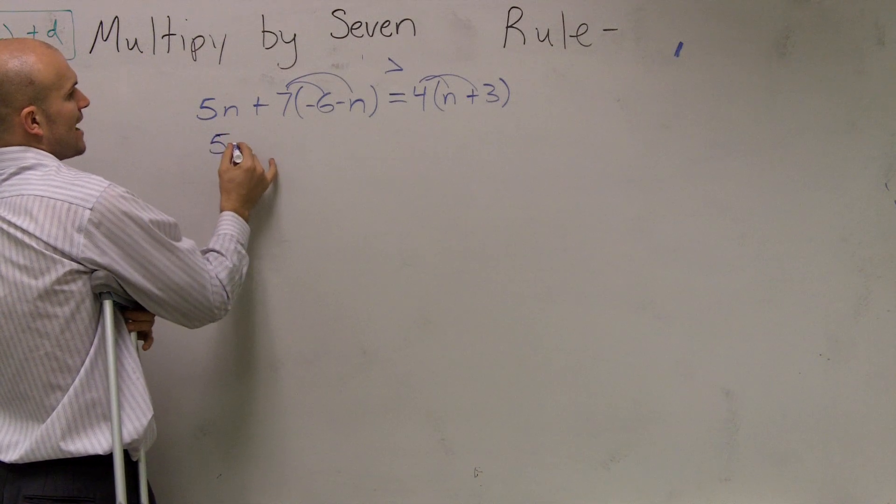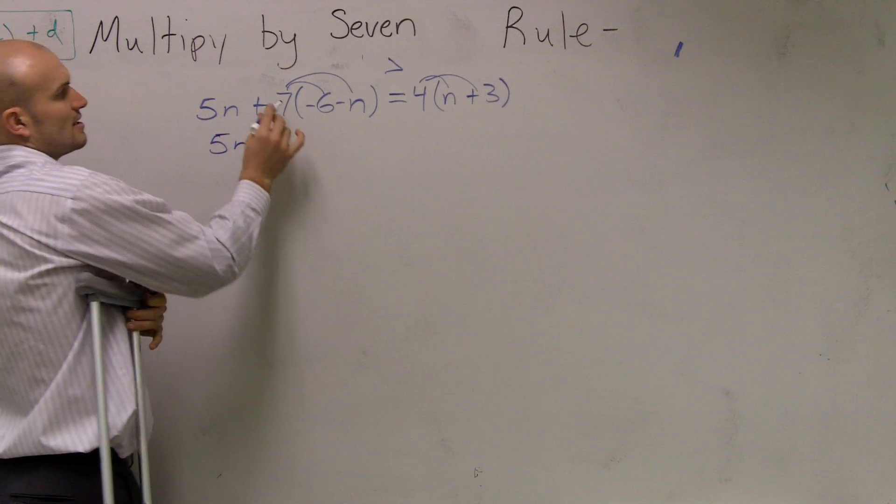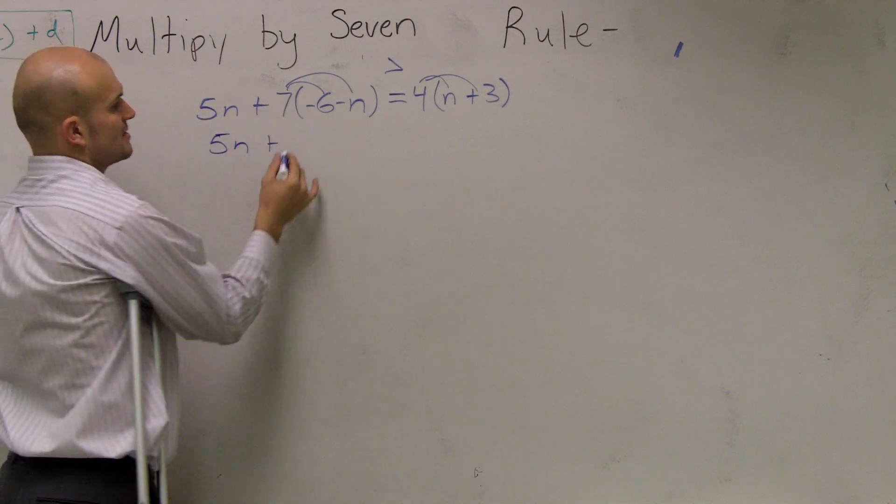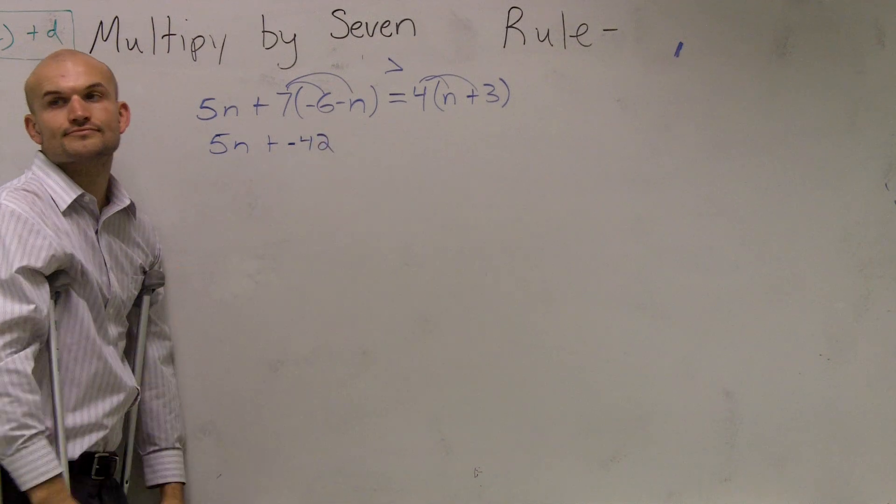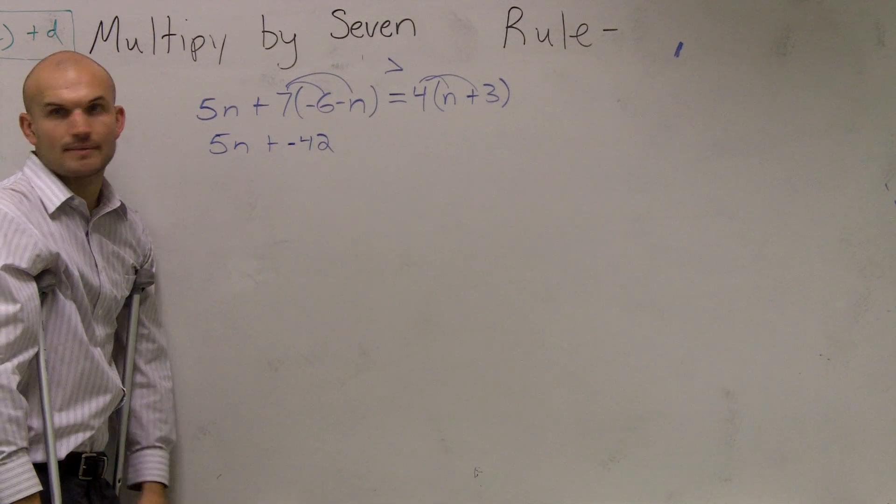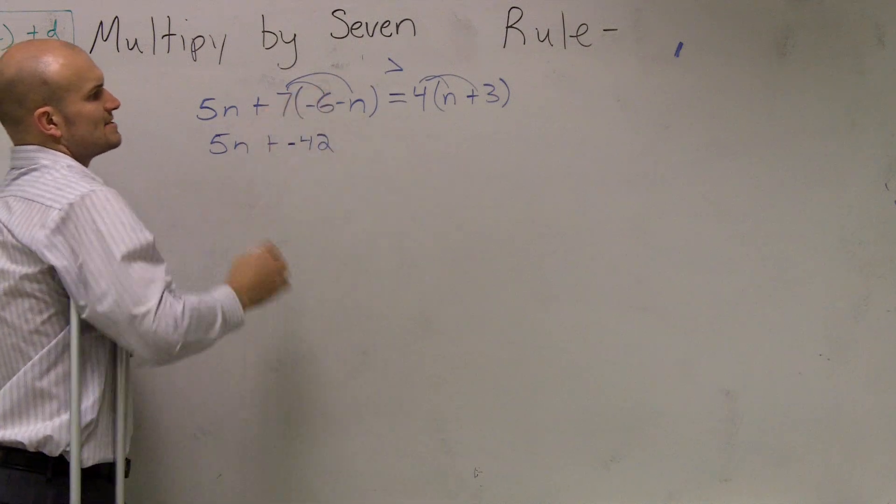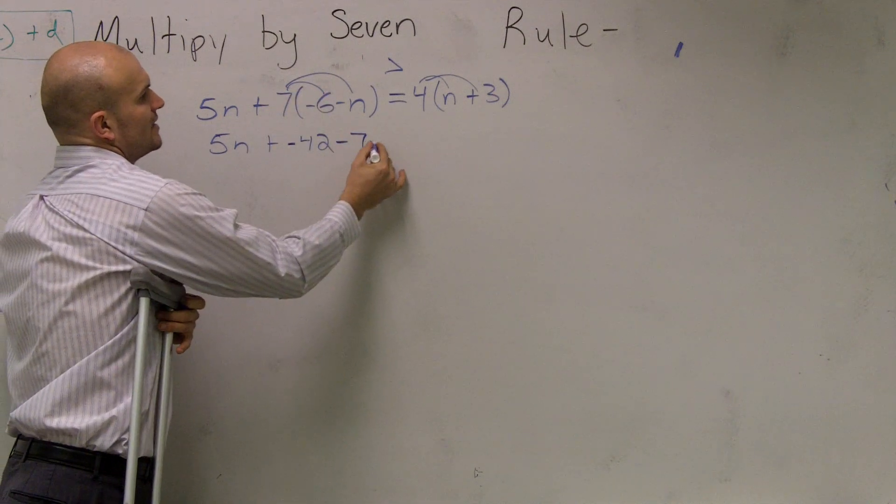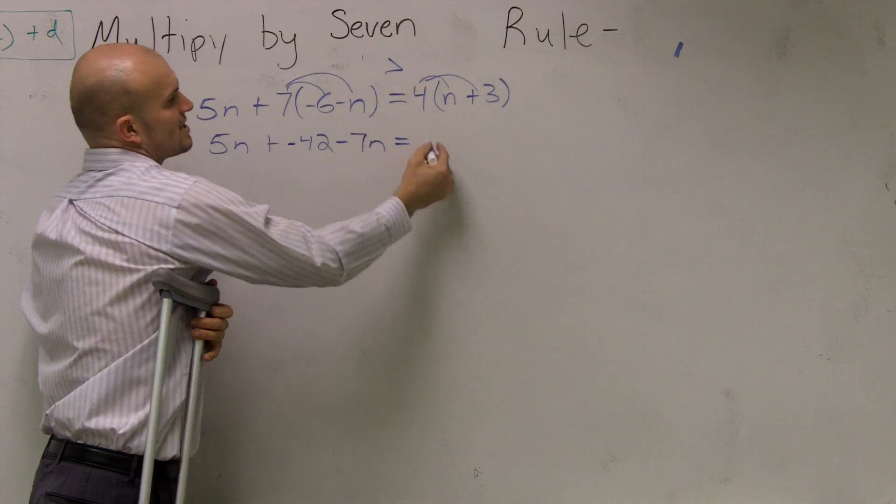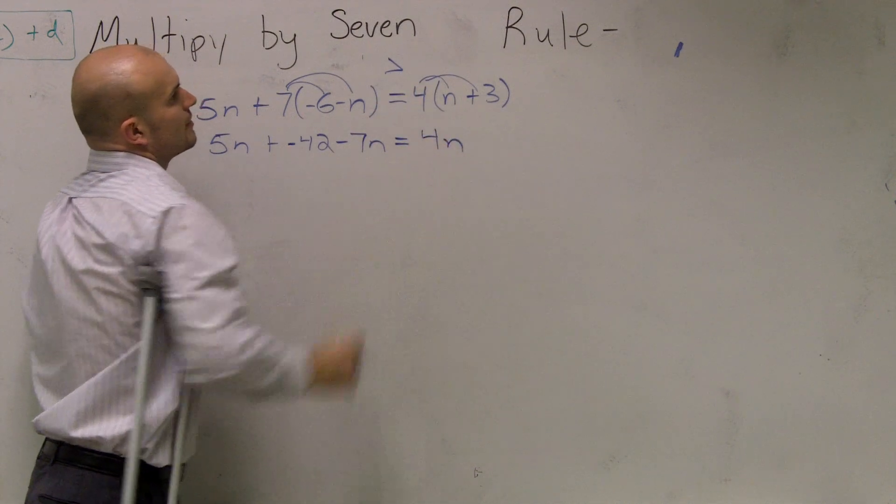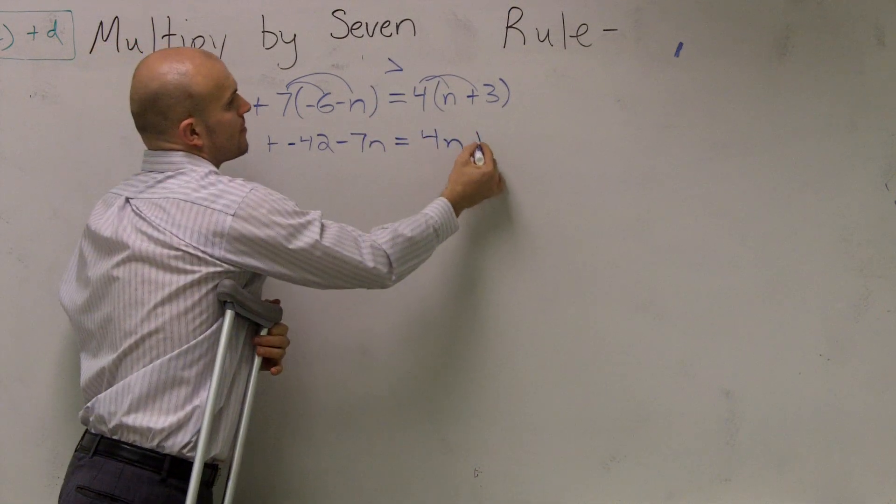So now I rewrite my problem. 5N plus 7 times negative 6 is a negative 42. 7 times negative N is a negative 7N. 5N equals 4 times N is 4N. And 4 times 3 is 12. Positive 12.